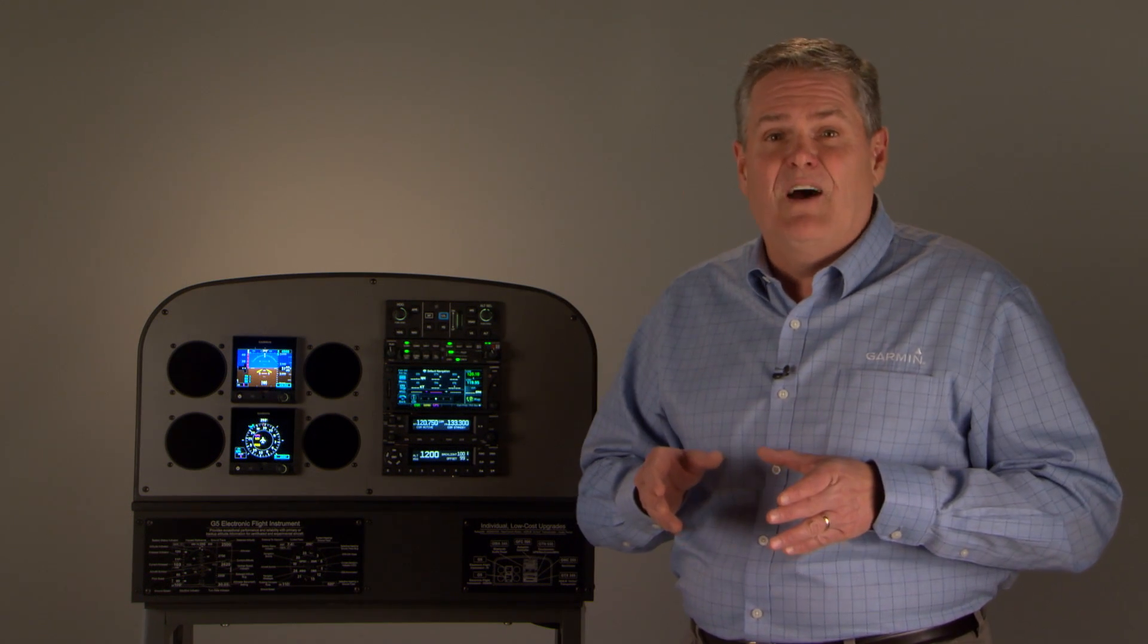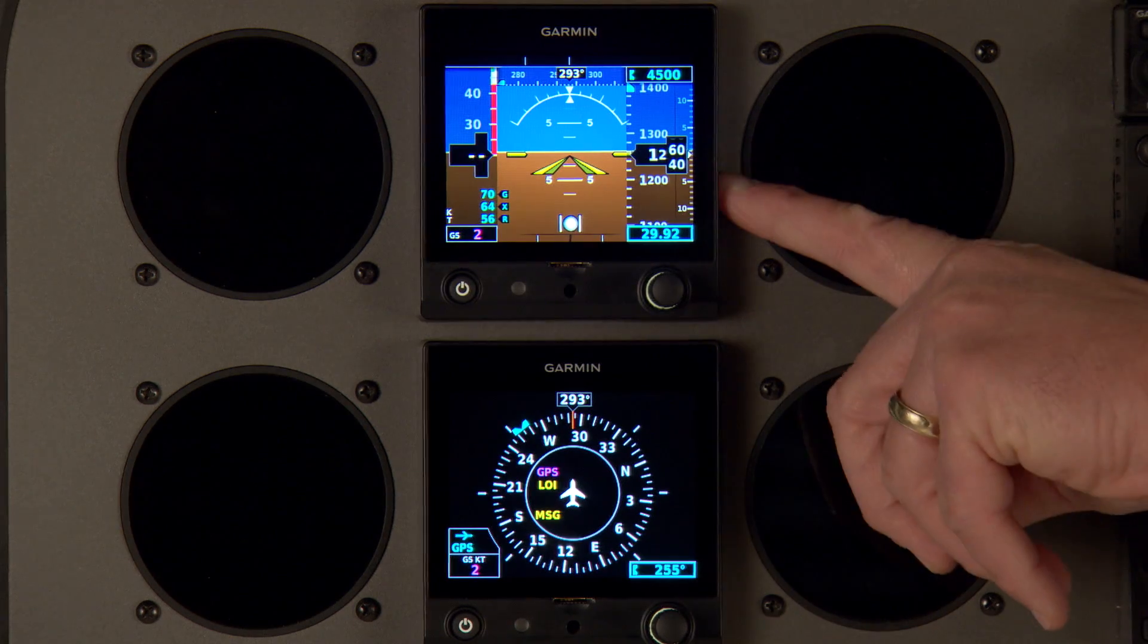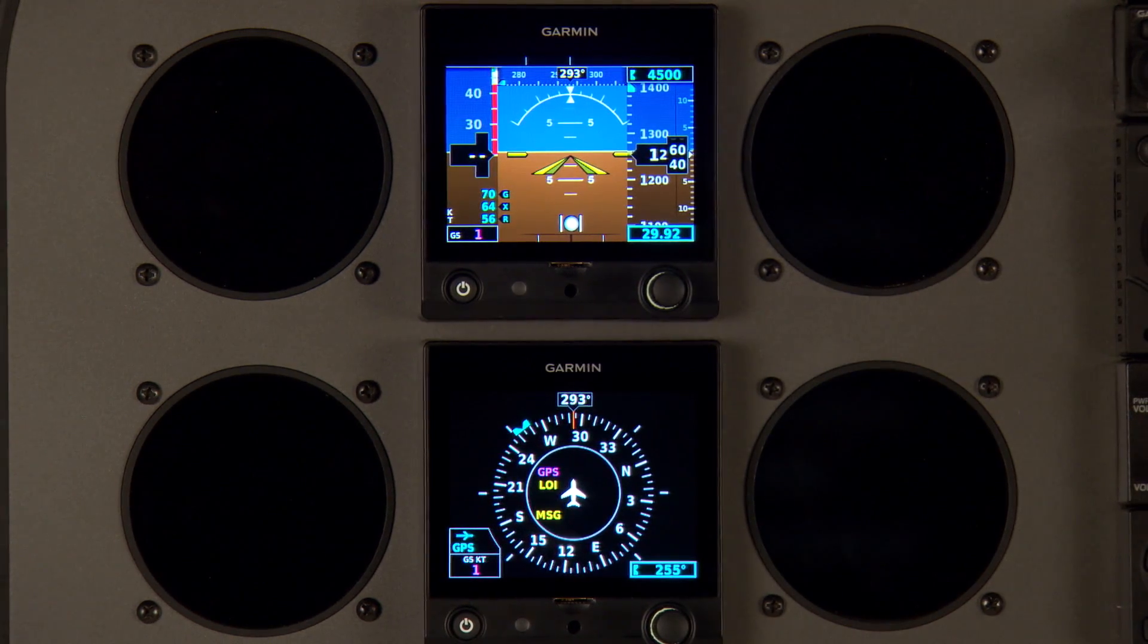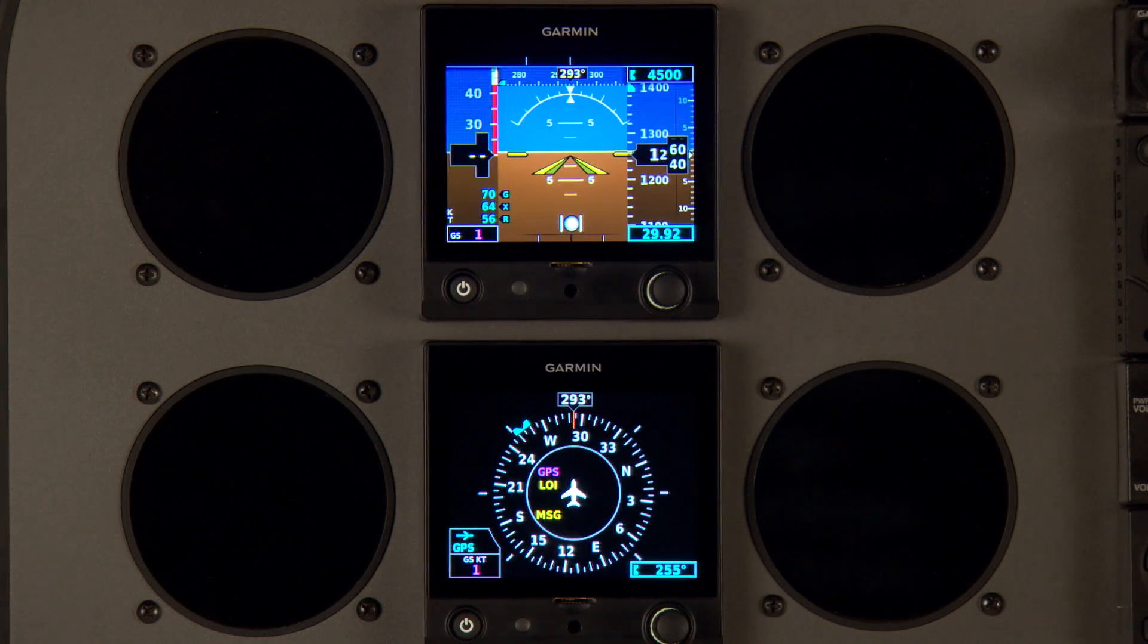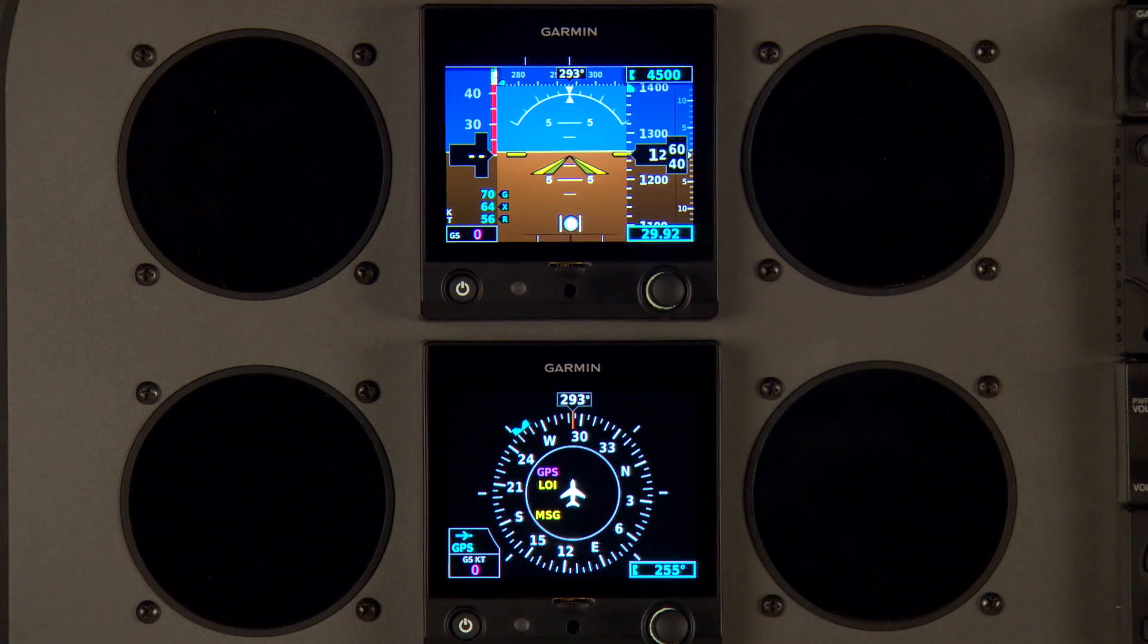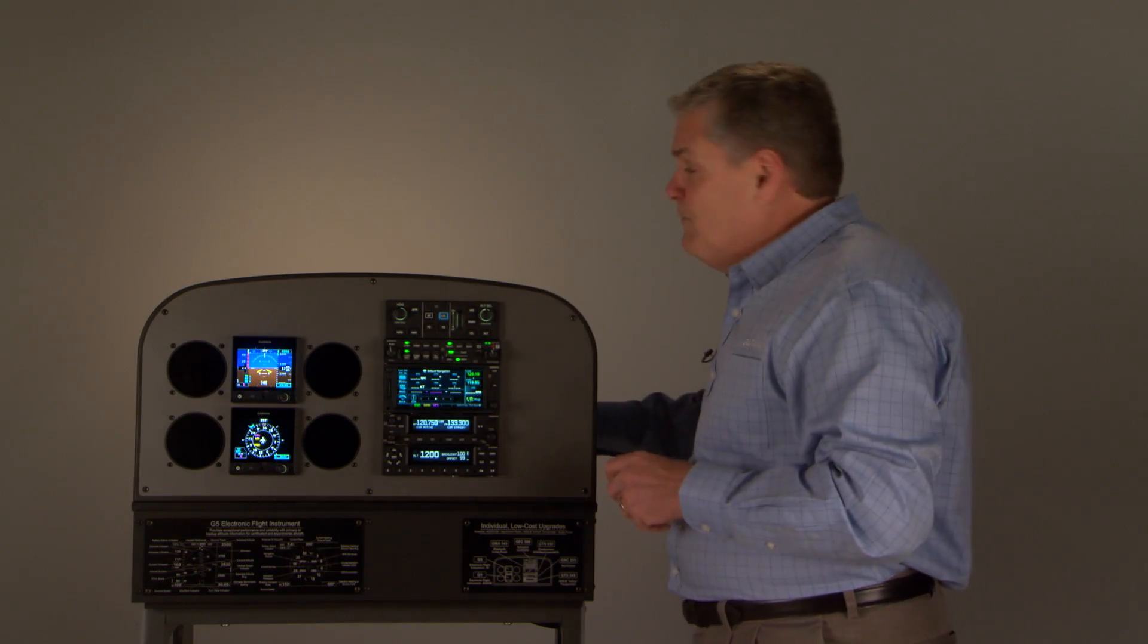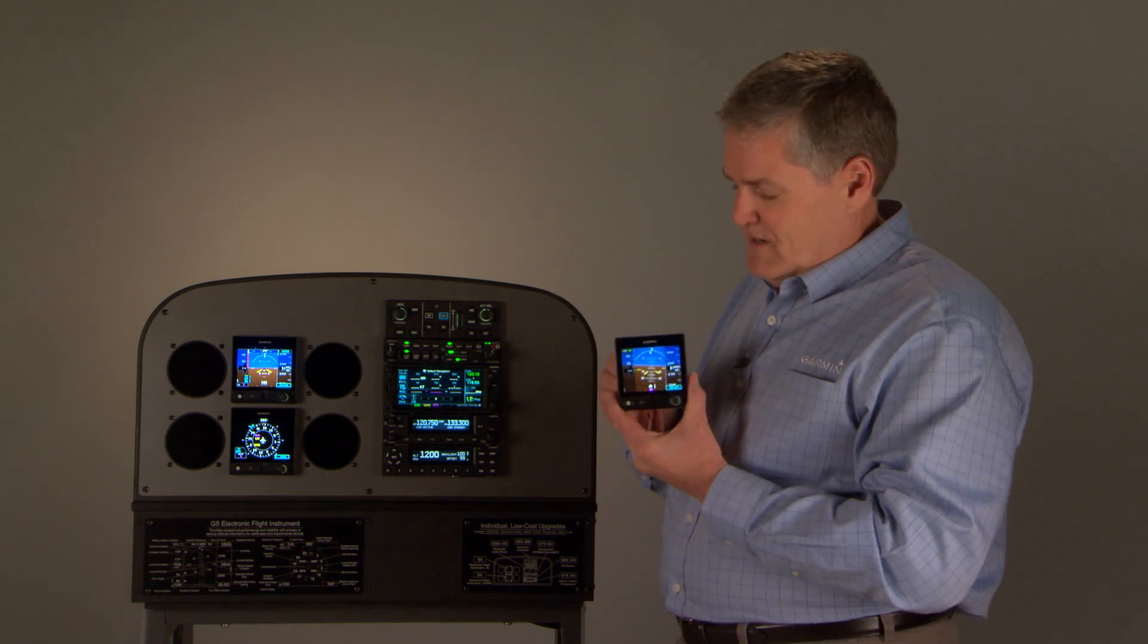First, let's look at the G5. It comes in two configurations. It can be an attitude indicator that replaces your primary attitude indicator you have in the airplane today, or it can be a DG directional gyro slash HSI.